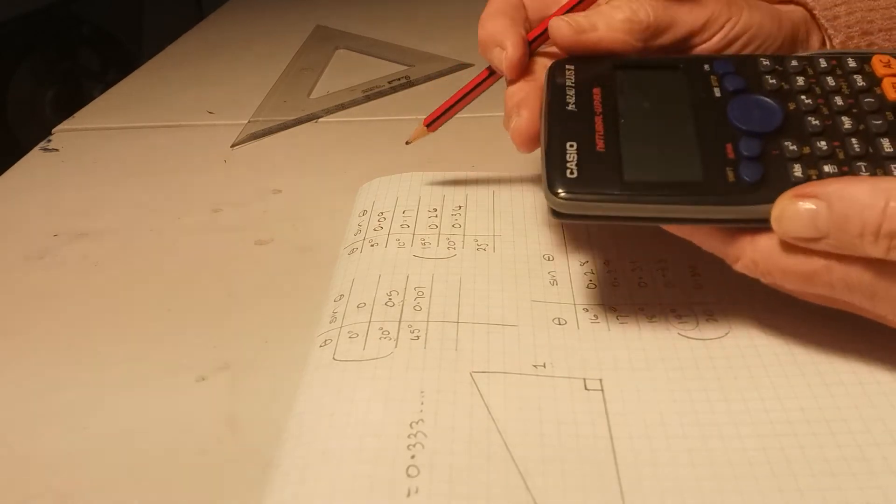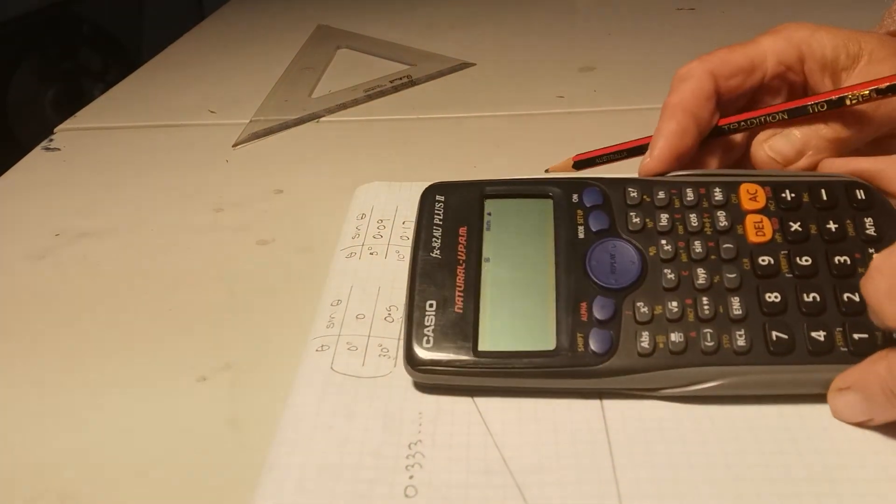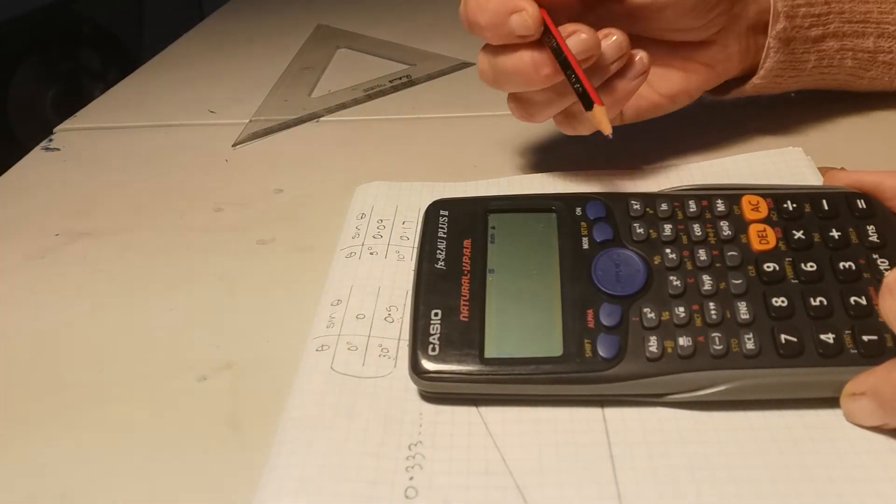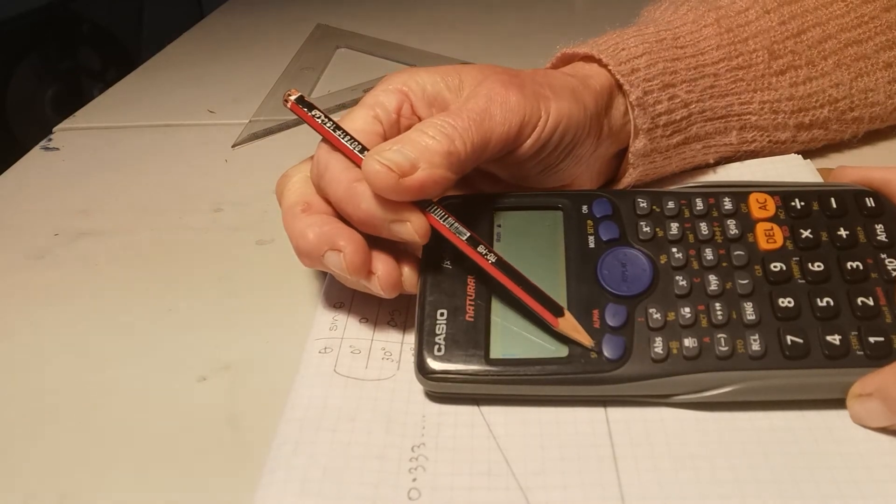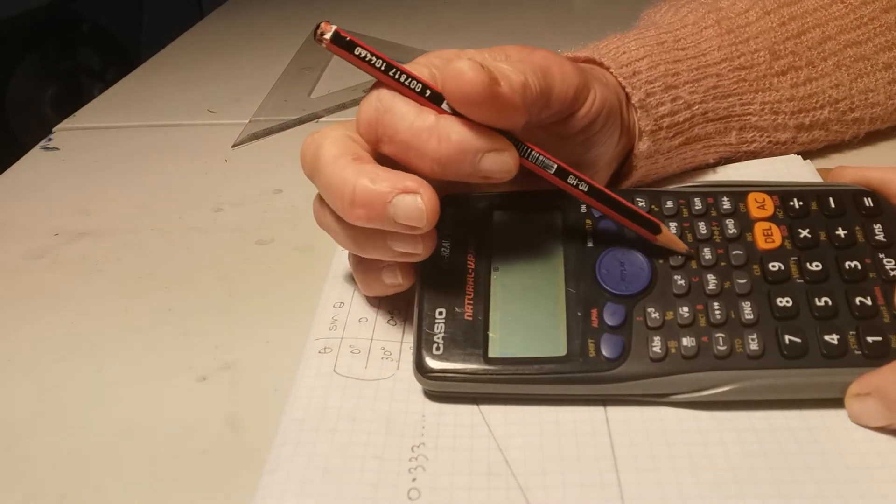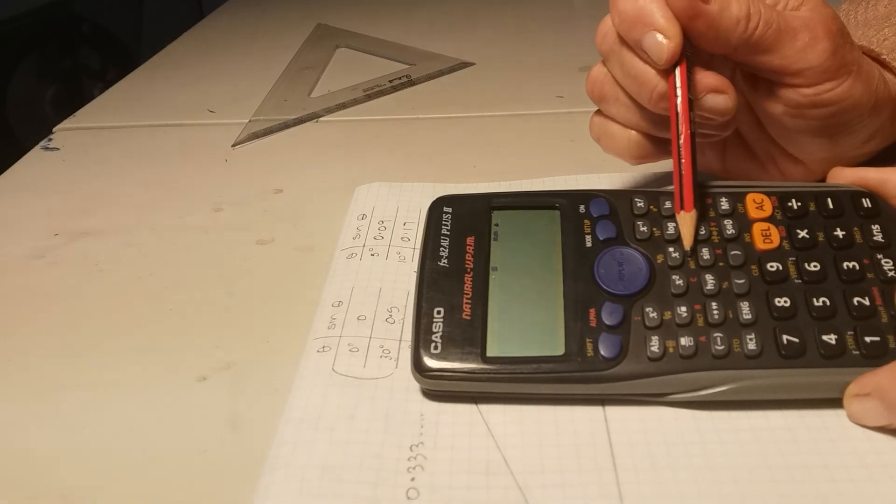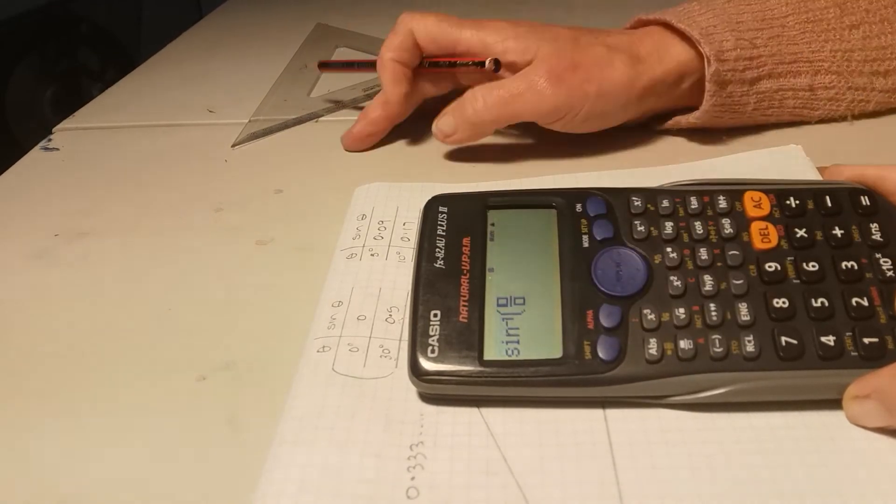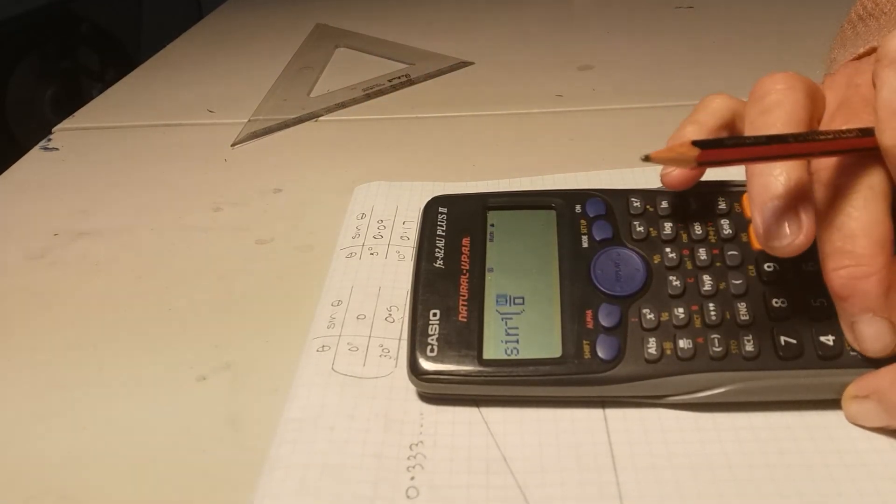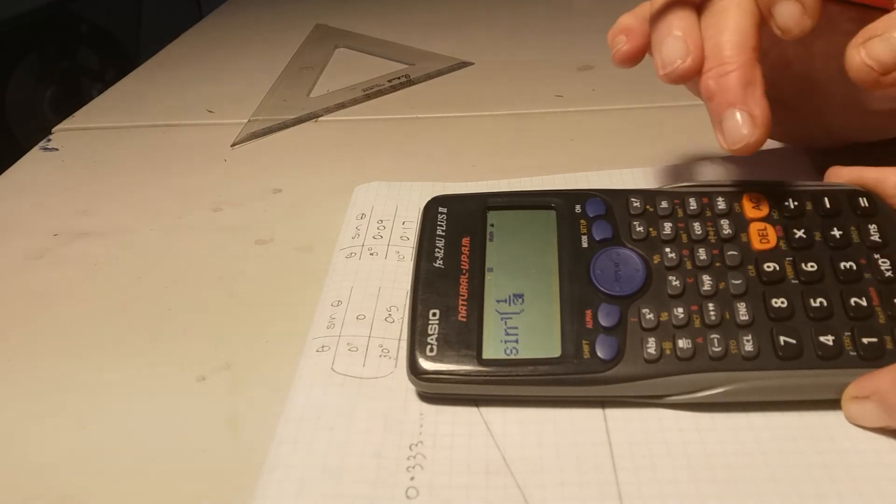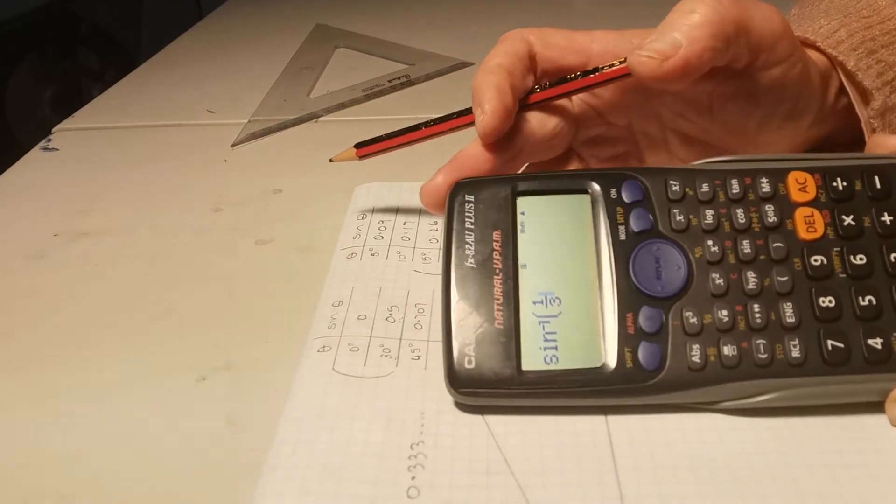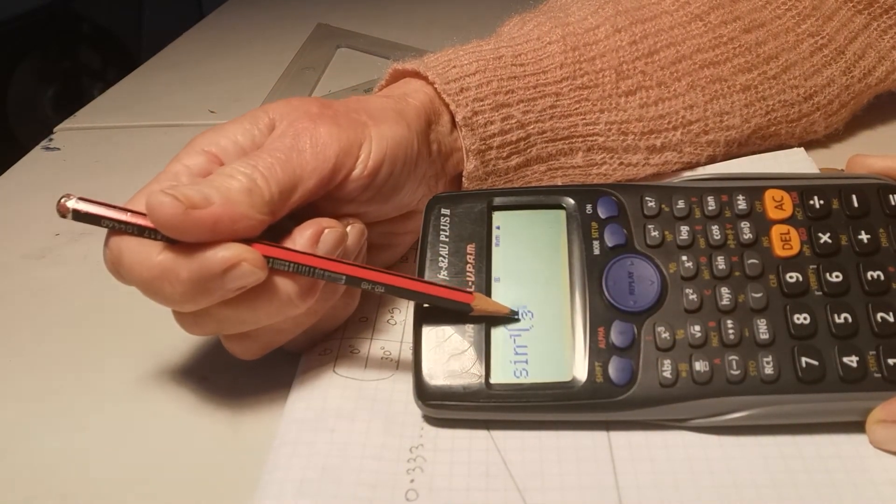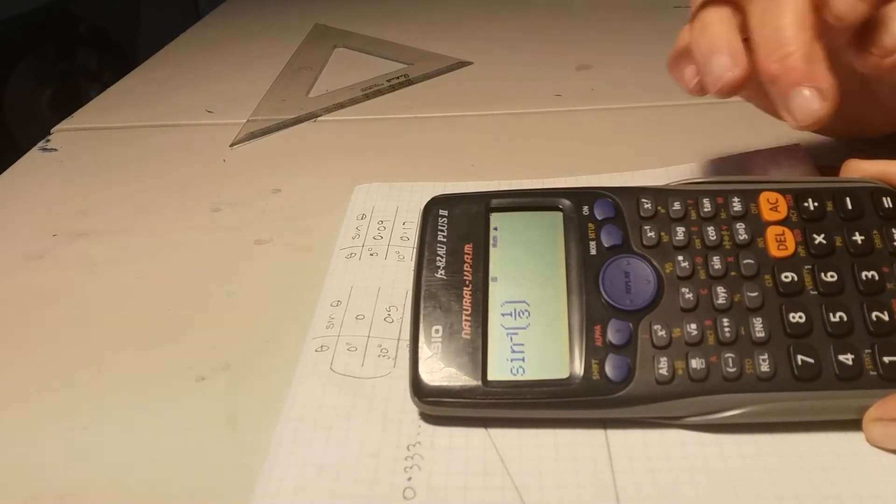Well, there is actually an easy way on our calculator. We can use the inverse of 1 third. So we find that by using the shift button, which allows us to use the inverse of the sine. So shift inverse of the sine, we'll put in the fraction button, one on the top, down, three on the bottom. Arrow across to make sure your cursor is next to the middle of the fraction. Close the brackets and enter.